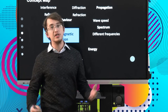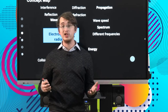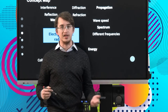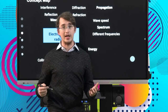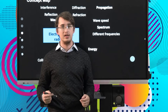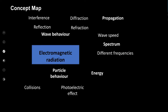Welcome back from your short break. Let's continue with our investigation into the electromagnetic spectrum and electromagnetic radiation. We've already had a quick look at some of the properties of waves and particles, and some of the properties that they share. Now it's time to relate them to electromagnetic waves and see how these properties give rise to the different types of electromagnetic radiation we see in the world around us. Let's head to our concept map.